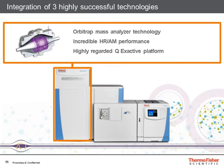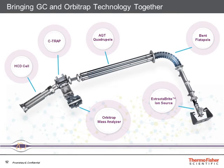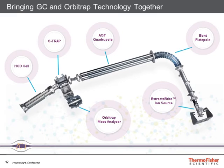Behind the ion source is our extremely popular orbitrap mass technology, providing incredible high-resolution accurate mass performance. Inside the instrument, we have the ion source on the right-hand side, and behind that a bent flatapole to ensure no neutral molecules are transferred further into the mass analyzer. We have a resolving quadrupole technology quadrupole, and then behind that our C-trap, which stores ions for injection into the high-resolution accurate mass orbitrap mass analyzer. We're also able to perform advanced fragmentation or MSn-type experiments.